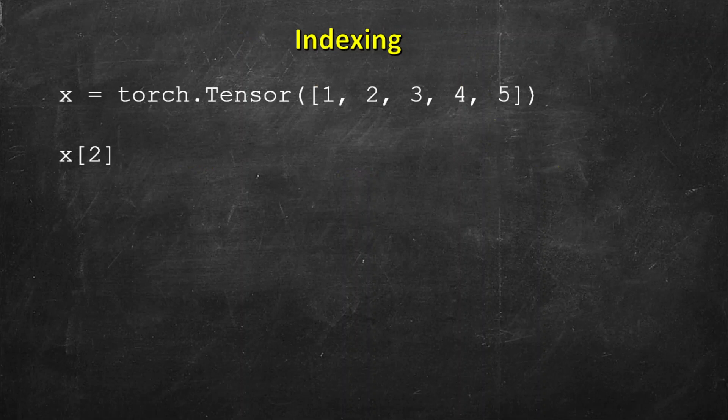First let's see an example of indexing. So let's say we have a tensor x and it has five elements in it: one, two, three, four, and five. We know that index starts from zero, so these are the indices, and we want to access the third element in this tensor.